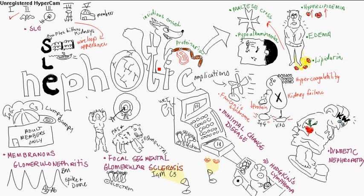You've got a sneaky fox here — it's insidious onset, it sneaks up. Proteinuria, so you've got hot dogs and steak protein. This leads to hyperlipidemia, generalized edema, lipiduria — so it has to do with lipids — and hypoalbuminemia.